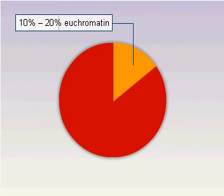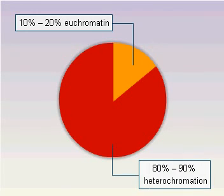Only 10–20% of the chromatin is present in the form of euchromatin. The remainder is in the form of heterochromatin.